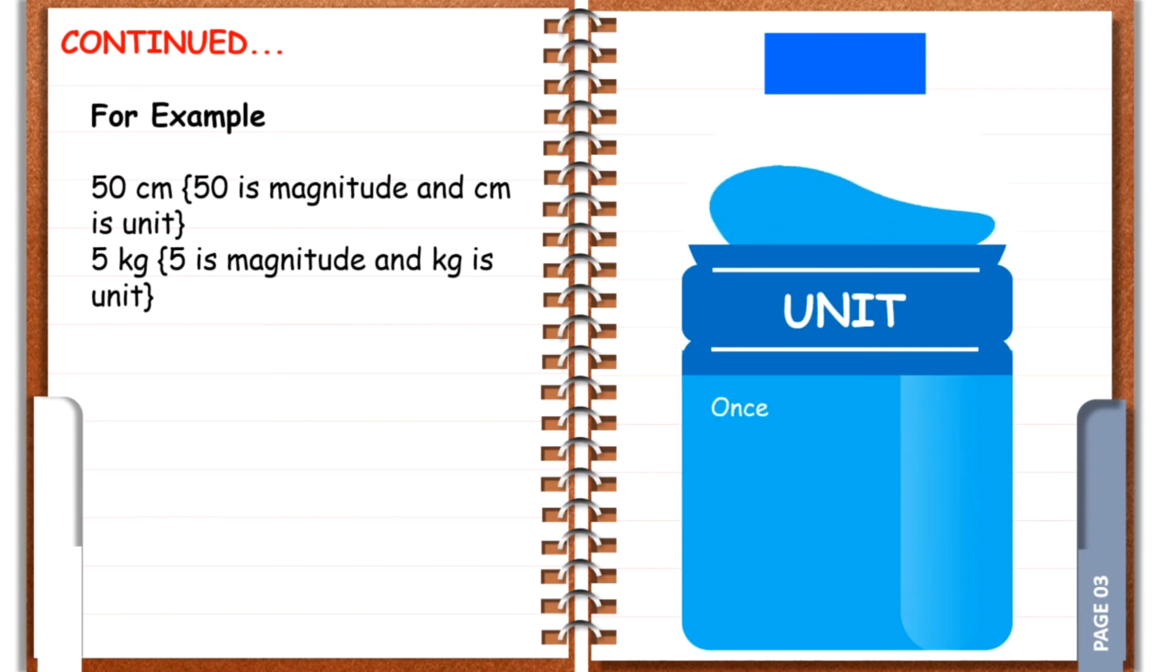Now we are going to define the unit. Once a standard is set for a quantity then it can be expressed in terms of that physical quantity. This standard quantity is called unit.